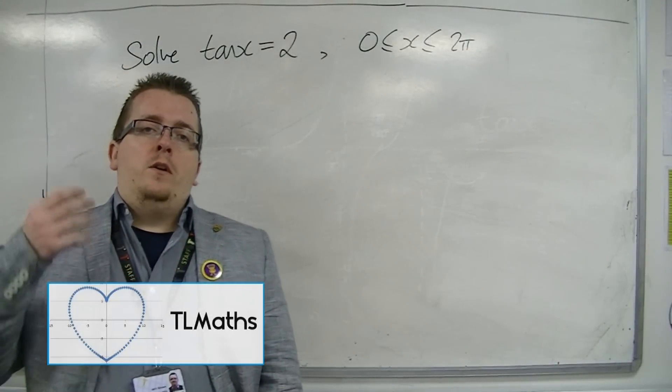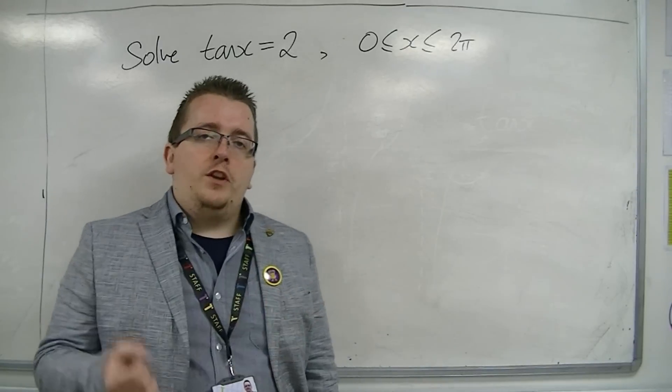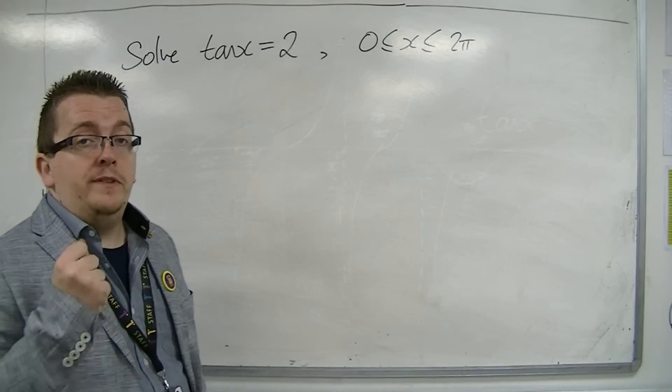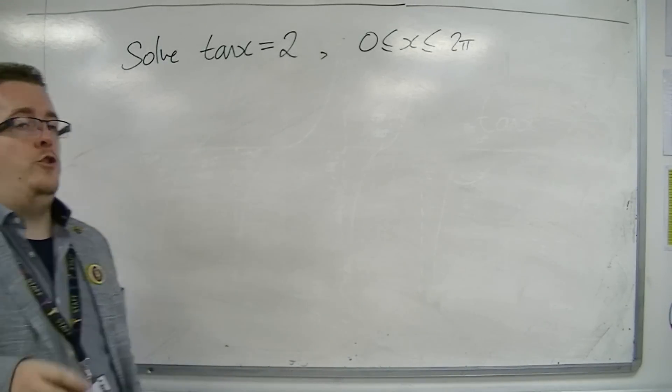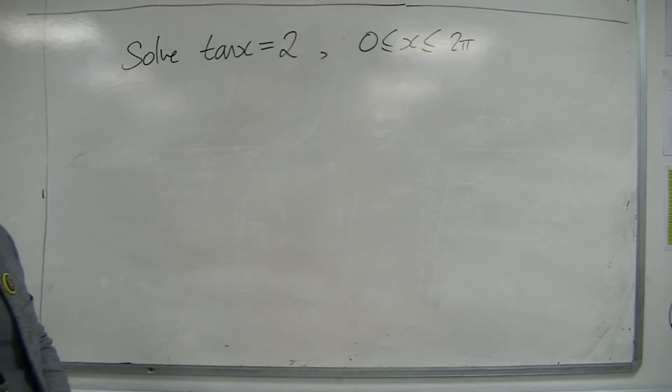So in this video, now that we've been able to solve an equation involving sine and one involving cosine, we're now looking at tangent. So we're going to solve tan x equals 2 between 0 and 2π.